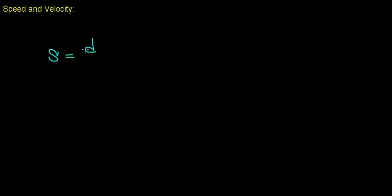In everyday life, we like to talk about how fast objects travel, and when we do so, we talk about an object's speed, which is abbreviated with a lowercase s. It's calculated by taking the distance the object travels and dividing it by the time it takes for the object to travel this distance.